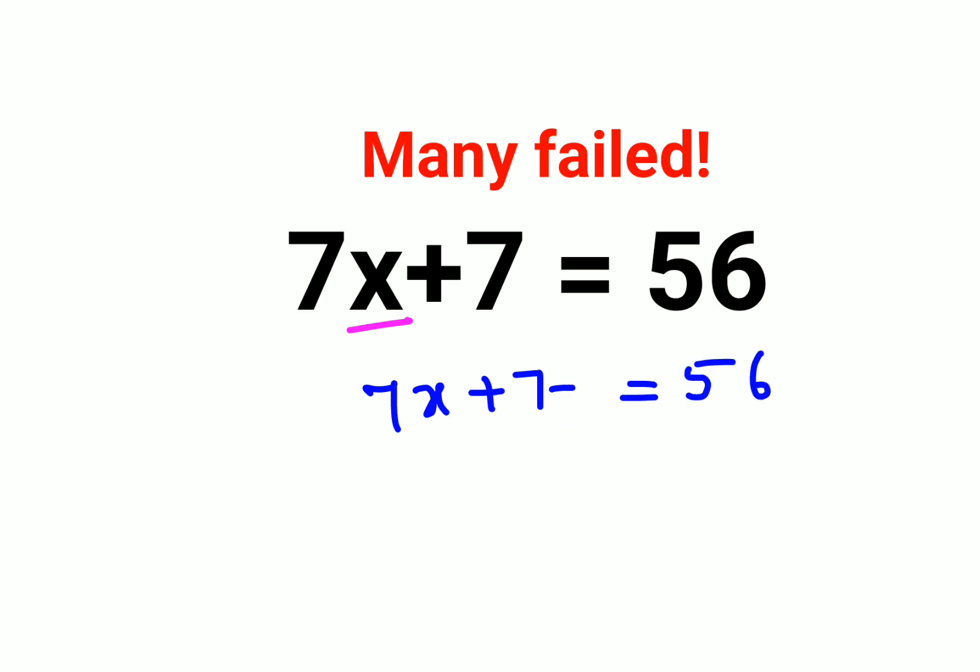Okay, so here we have plus 7, we will subtract 7 on both sides. So now we have 7x equals to 49.